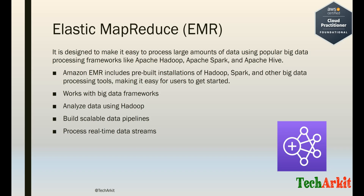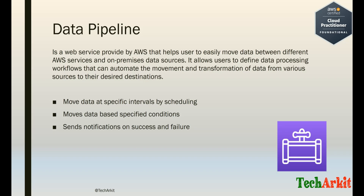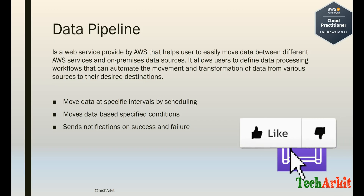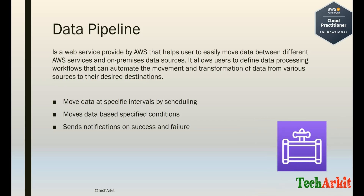AWS Data Pipeline is a web service that helps users easily move data between different AWS services and on-premises data sources. It allows users to define data processing workflows that automate the movement and transformation of data from various sources to their desired destinations. Data pipelines can be run on a schedule at specific intervals, and you can define conditions or logic that determine when and how data is moved. It also sends notifications on success and failure.